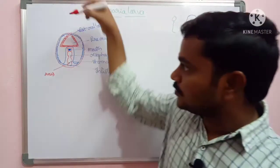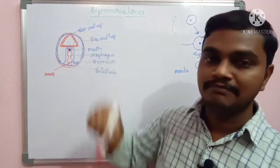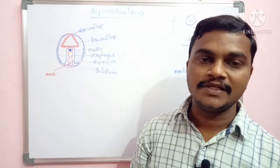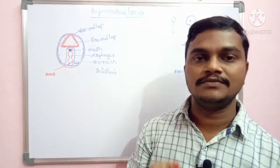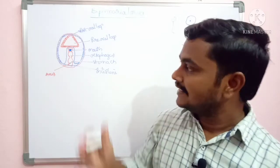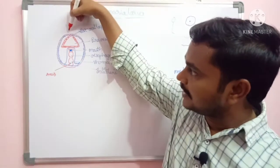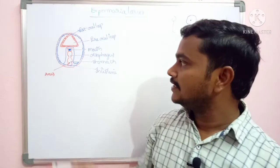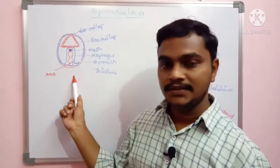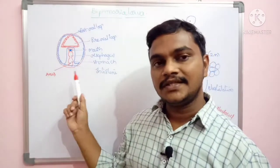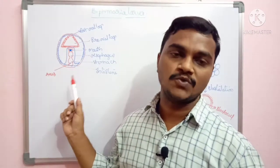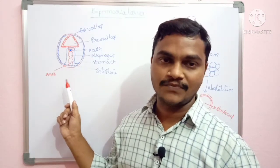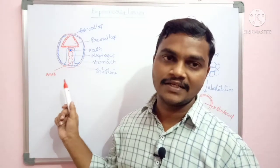Maximum echinoderms exhibit bilateral symmetry. Adult forms of echinoderms exhibit pentamerous radial symmetry. In the case of larval forms, they exhibit bilateral symmetry. These are deuterostomes — from the blastopore, the anus forms first and later the mouth forms.